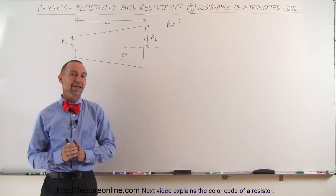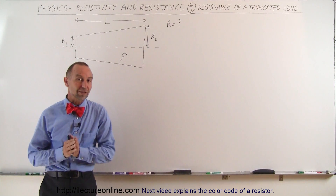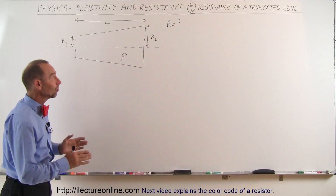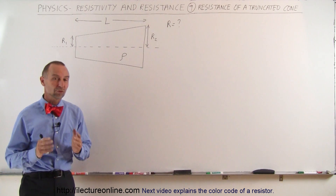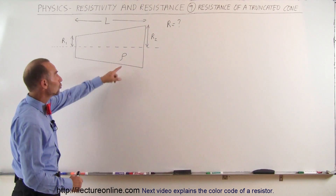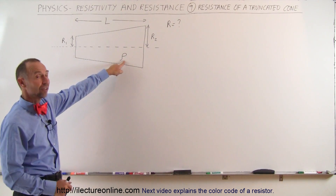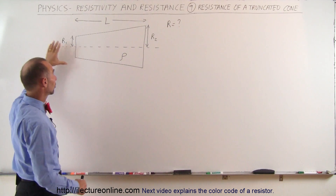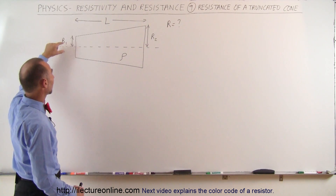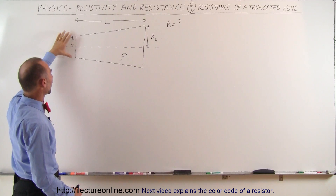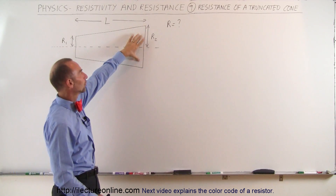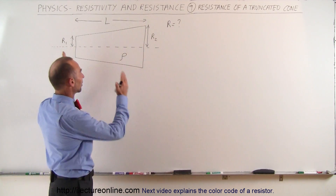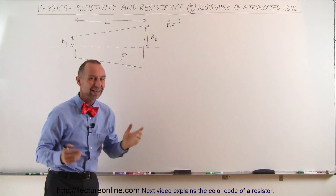Welcome to Electronline. Now we're going to try to find the resistance of a truncated cone. The resistance has uniform resistivity, but look at the shape. It has a radius of R1 at the front, and a radius of R2 at the back, and it has a length of L.